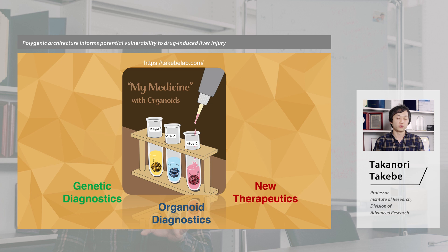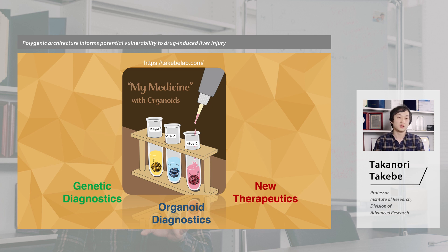Third, our genetic risk score also informs a number of key pathways regulating drug-induced liver damage, so we can potentially target those mechanisms to treat the condition and develop new drugs for therapy. In summary, we can foresee a variety of exciting applications through organoid-based precision medicine. Thank you.